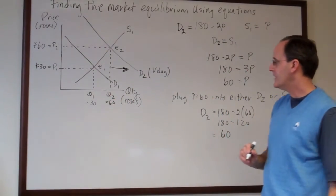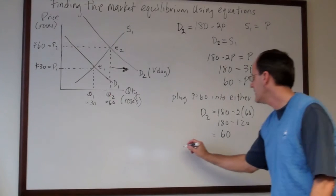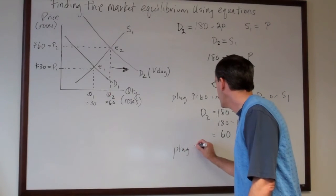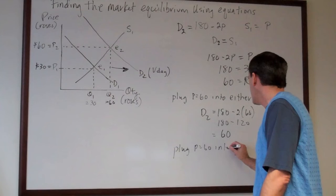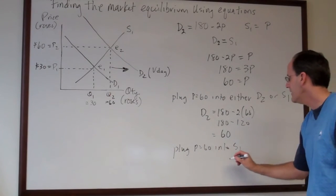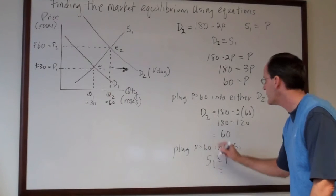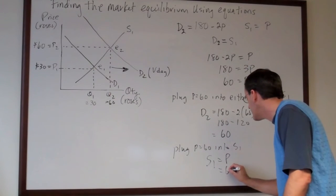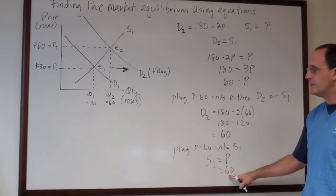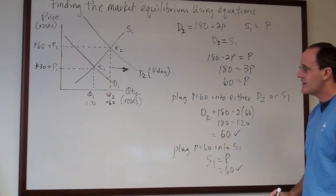If you're not convinced that that's correct you can also plug p is equal to 60 into s1. And s1 is just equal to the price. And of course the price that we're plugging in here is 60. And so s1 is also 60. 60 and 60 checks.